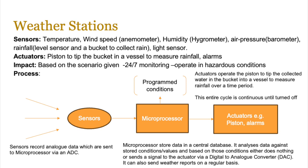Now if you look at weather stations, there are a lot of sensors involved. Generally weather stations aren't really suitable for automated systems; however they are becoming more and more important and are being linked to motors and sprinklers and all sorts of things. Sensors include temperature, wind speed, humidity, air pressure, rainfall, and light sensors. Where actuators come in, they are used to operate certain devices — for example, to collect rainfall a bucket collects water and then a piston is used to tip the bucket over, and that's where the actuator comes in.